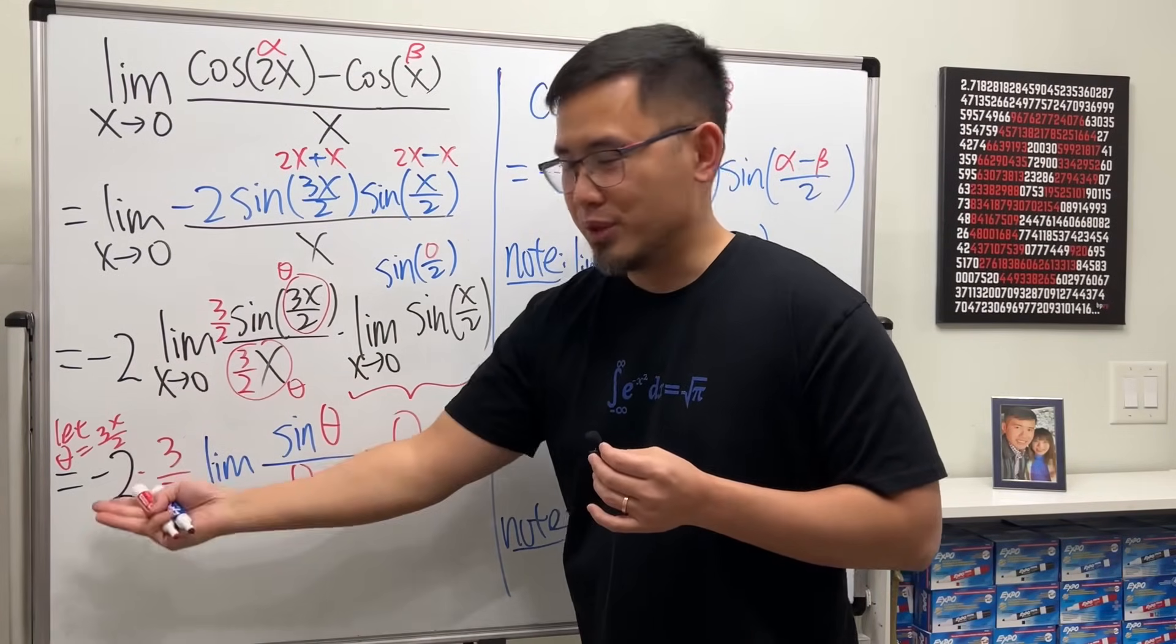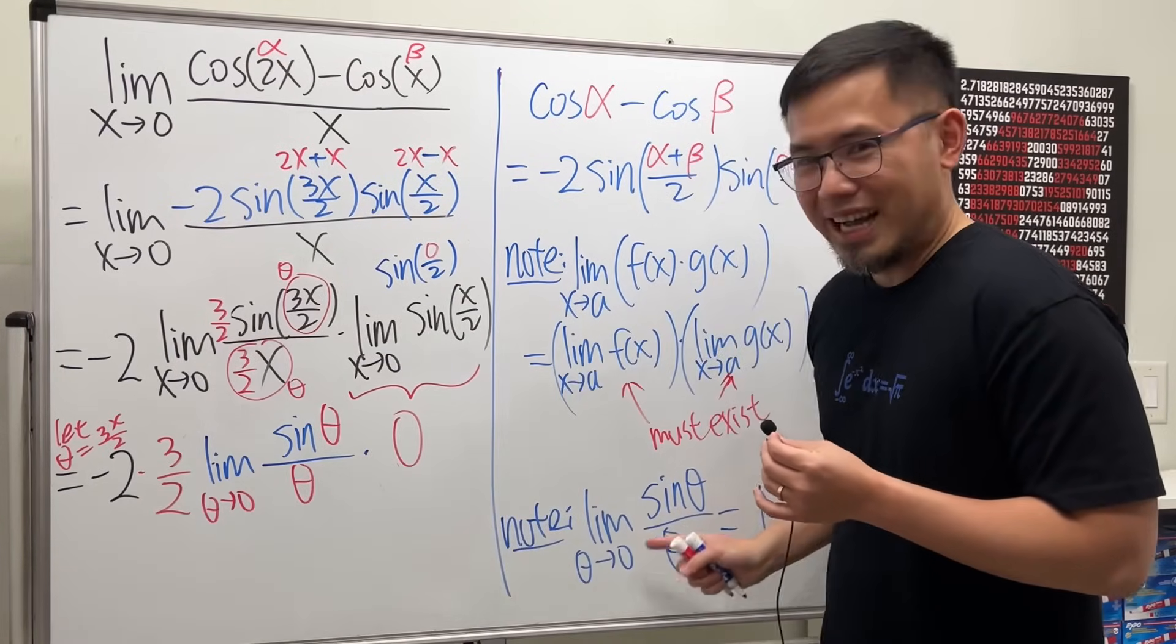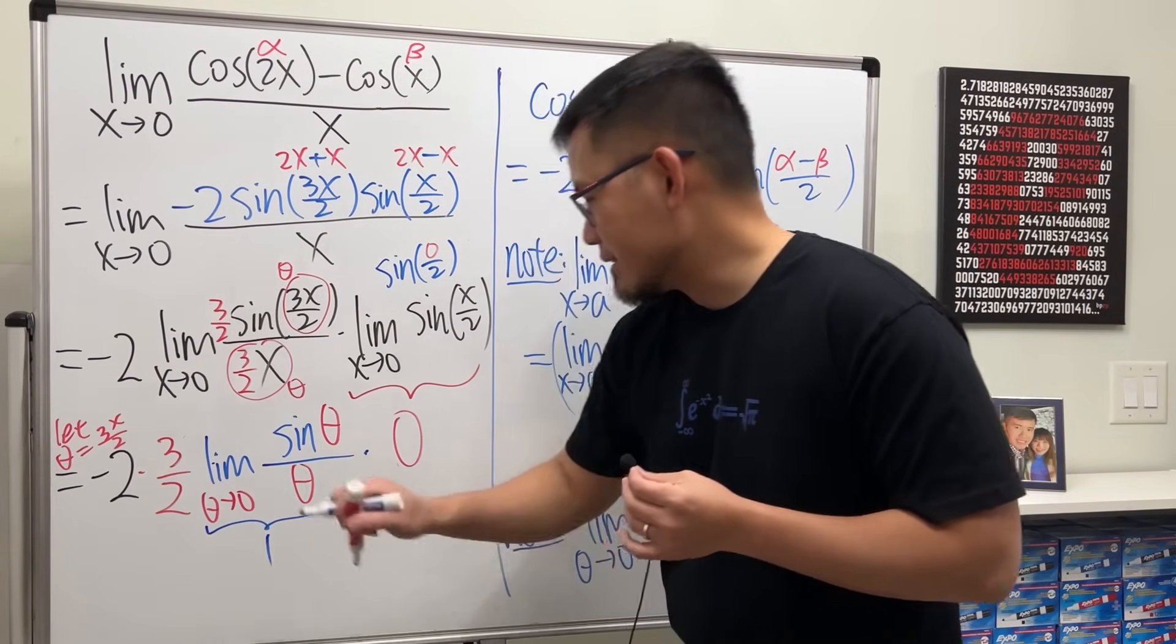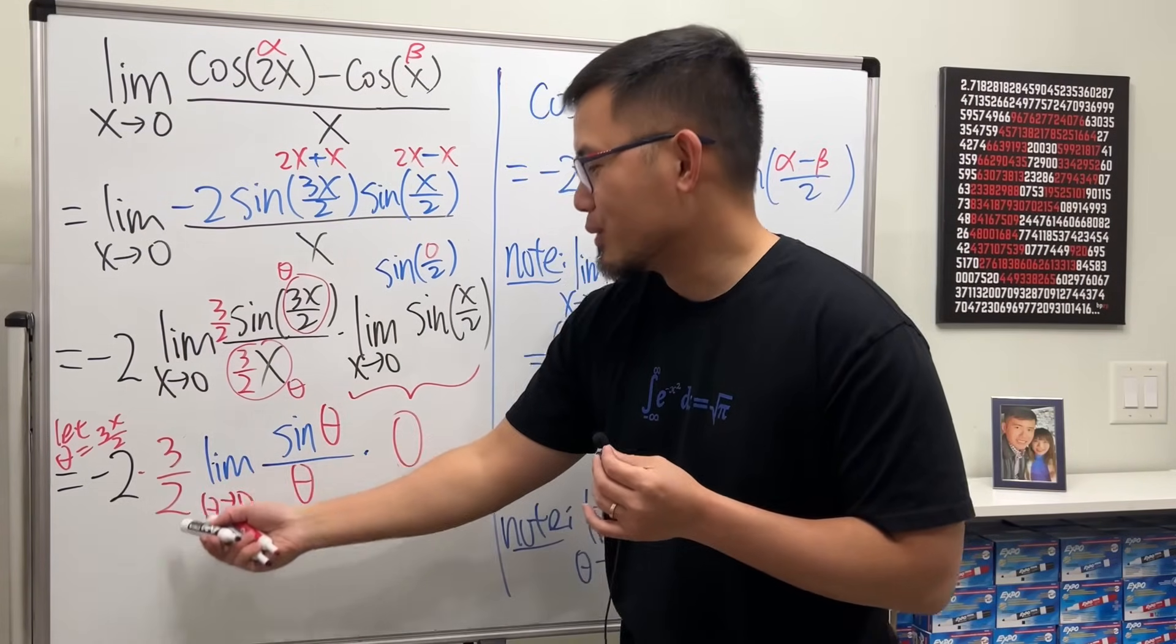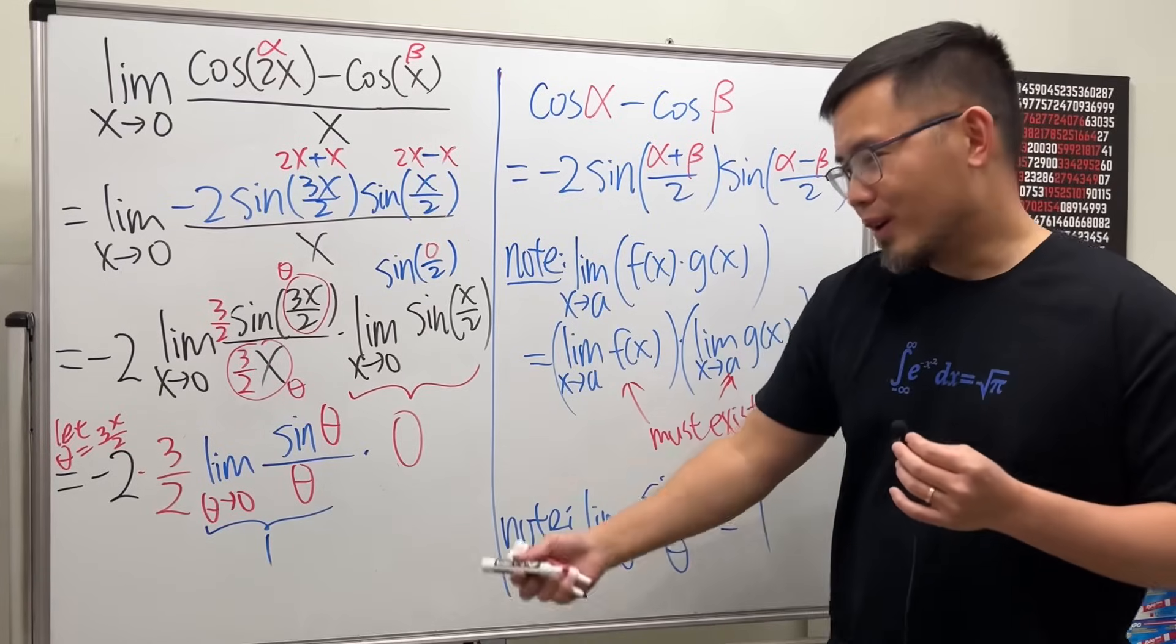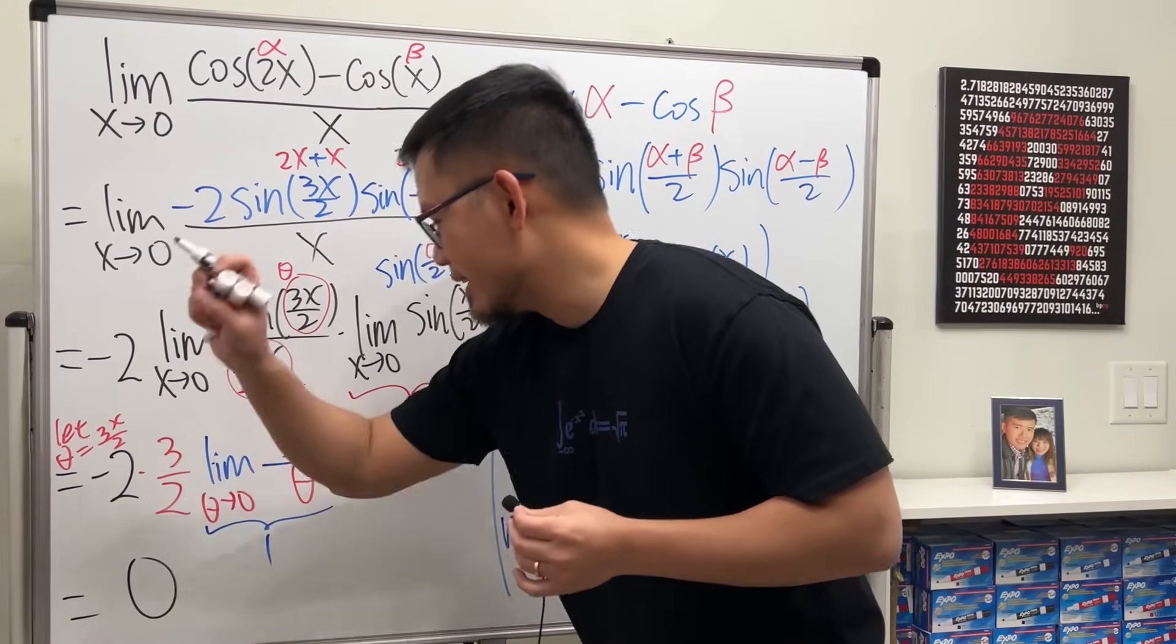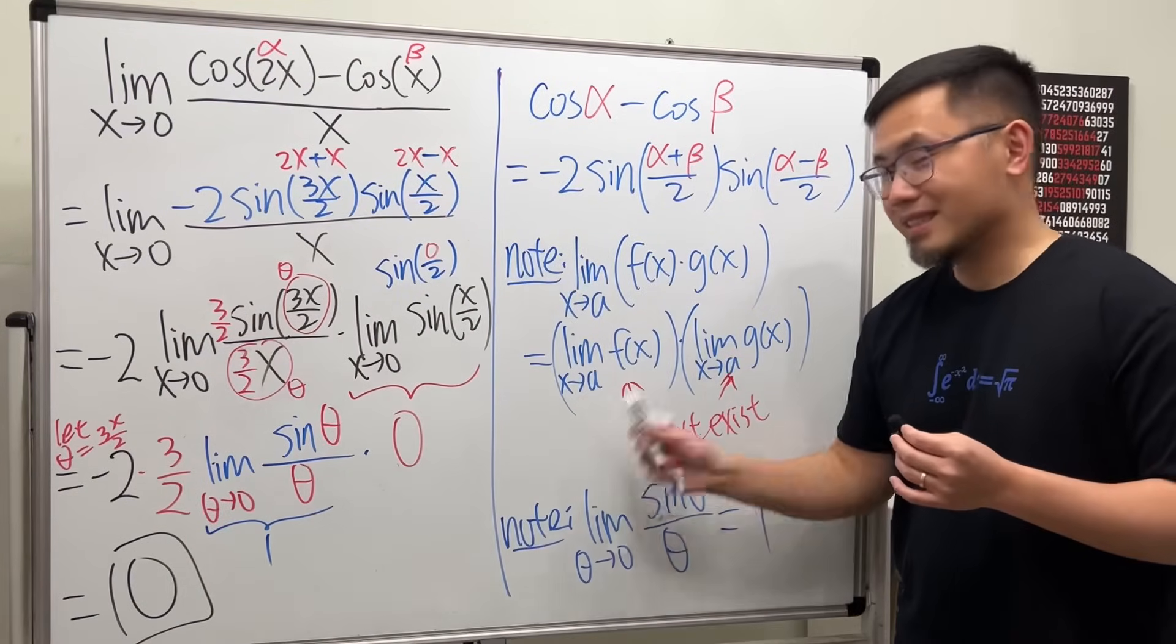This right here will give us 3/2, and then times this is just 1, because this is just that, right? So now we can just say, because that is equal to 1, we have negative 2 times 3/2 times 1 times 0. So all in all, the answer is equal to 0. So that will be the answer for that limit. That's it, okay.